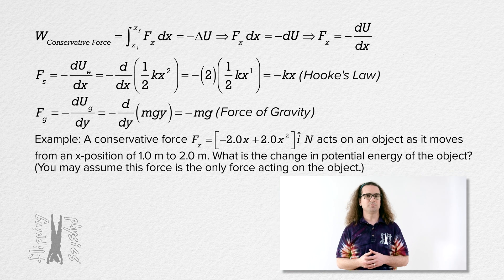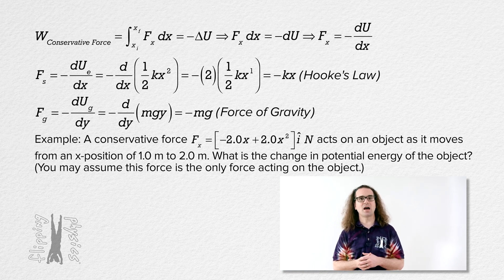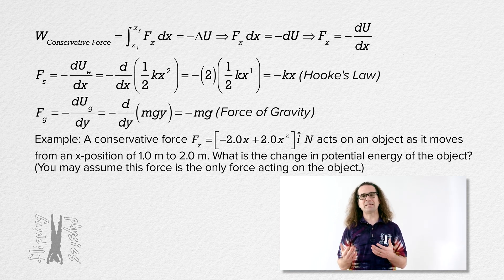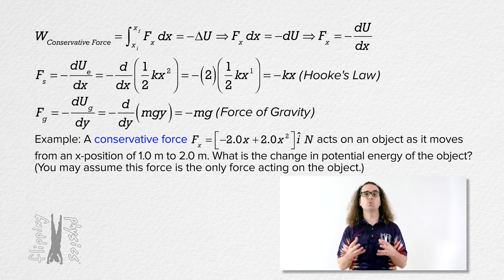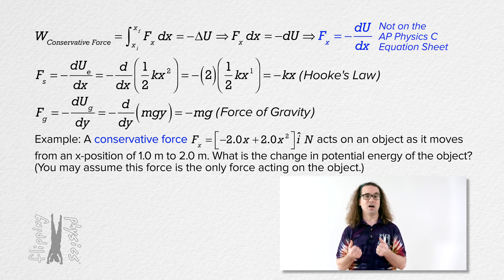Now let's work through an example. We have a conservative force of negative 2.0x plus 2.0x squared, all times unit vector î, in newtons, that acts on an object as it moves from an x position of 1.0 meters to 2.0 meters. What is the change in potential energy of the object? When you see the term conservative force, you need to immediately think of the equation F_x equals the negative derivative with respect to x of the potential energy. Note this equation is not on the AP Physics C equation sheet, so you need to memorize it.